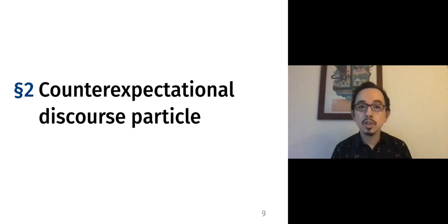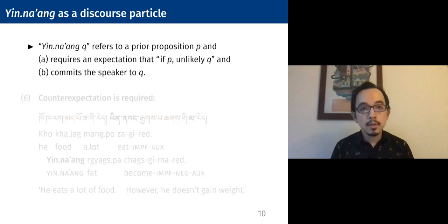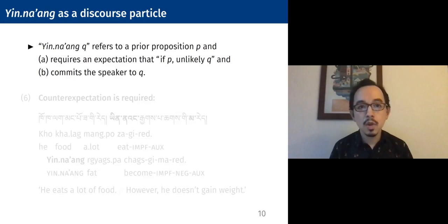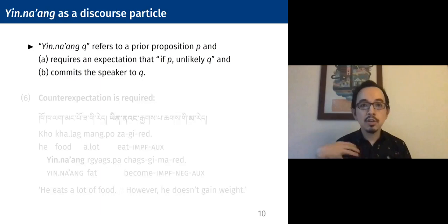So let's talk first about the counter-expectational particle use. When we say a sentence that is 'yinang Q,' referring to a prior proposition P that someone has uttered, it requires an expectation that if P, it's unlikely that Q, therefore making Q unexpected, and the speaker is committed to Q. That's the semantics we want to get.